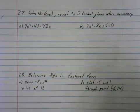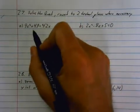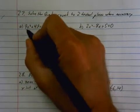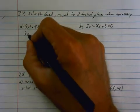Okay, solve the quadratic, round to two decimal places where necessary. Alright, so first thing, you have to set these things equal to zero. Again, this squared term, the x squared term is positive, so I'm going to keep that here.